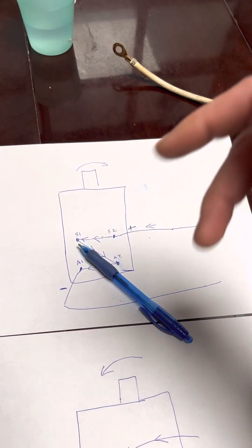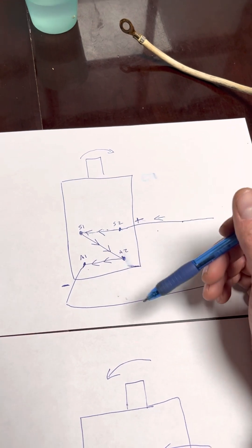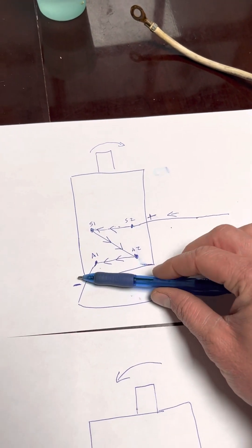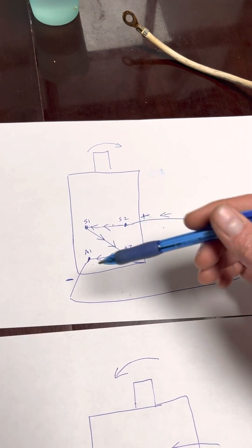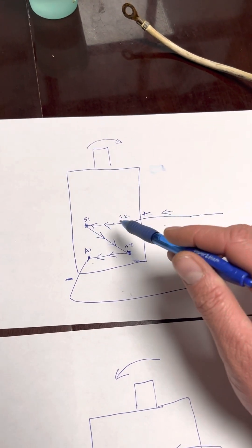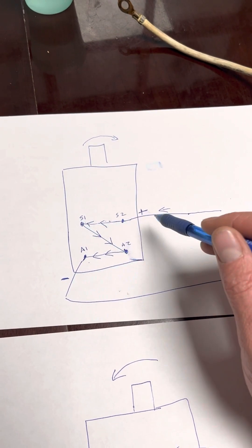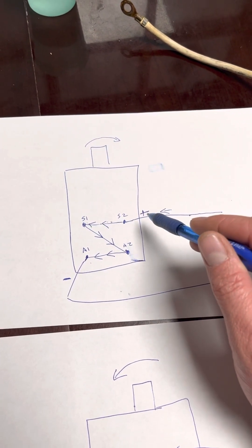And typically there's brushes that rub on that to produce the current in that armature. So what happens is the current flows through and we're just going to say it goes this way. So from positive to negative.